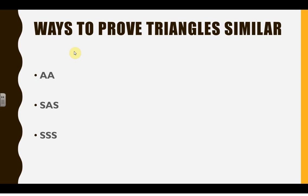Here are the three ways: angle-angle, side-angle-side, and side-side-side. The difference between this and the ones you've done before is that the sides don't stand for congruent sides in this case. They stand for proportional sides.